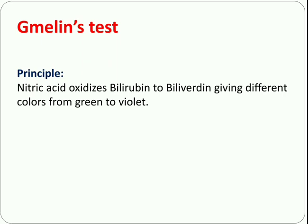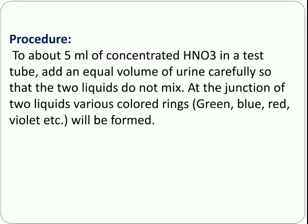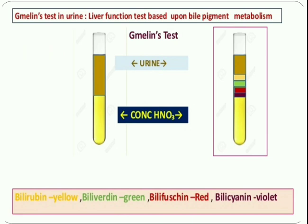The procedure of the Gmelin test: take 5 ml of concentrated nitric acid in a test tube, then add an equal amount of urine carefully so that the two liquids do not mix with each other. At the junction of the two liquids, various colored rings will be formed. If bilirubin is present, a yellow color ring is formed. If biliverdin is present, a green color ring will be formed. For bilirubin and biliverdin, red and violet color rings will be formed respectively.